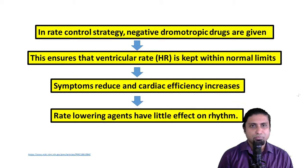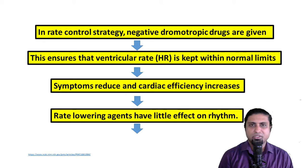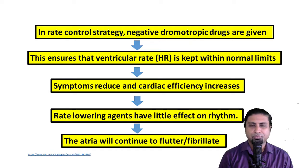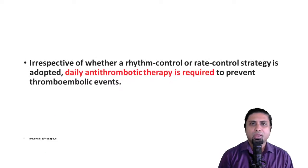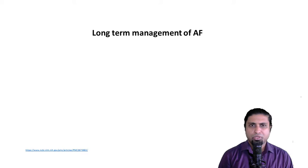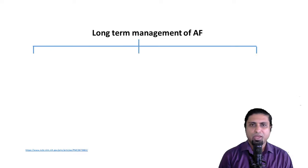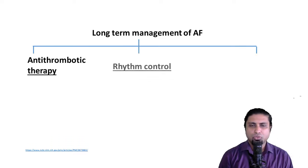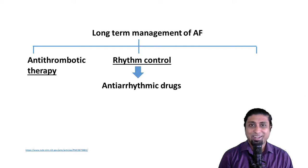It is extremely important to remember that rate-lowering agents have little to no effect on the rhythm of the heart. In other words, the atria will continue to flutter or fibrillate as the case may be. Irrespective of whether a rhythm control or rate control strategy is adopted, daily antithrombotic therapy is required to prevent thromboembolic events. So long-term management of atrial fibrillation and atrial flutter involves antithrombotic agents, rhythm control using antiarrhythmic drugs, and rate control.